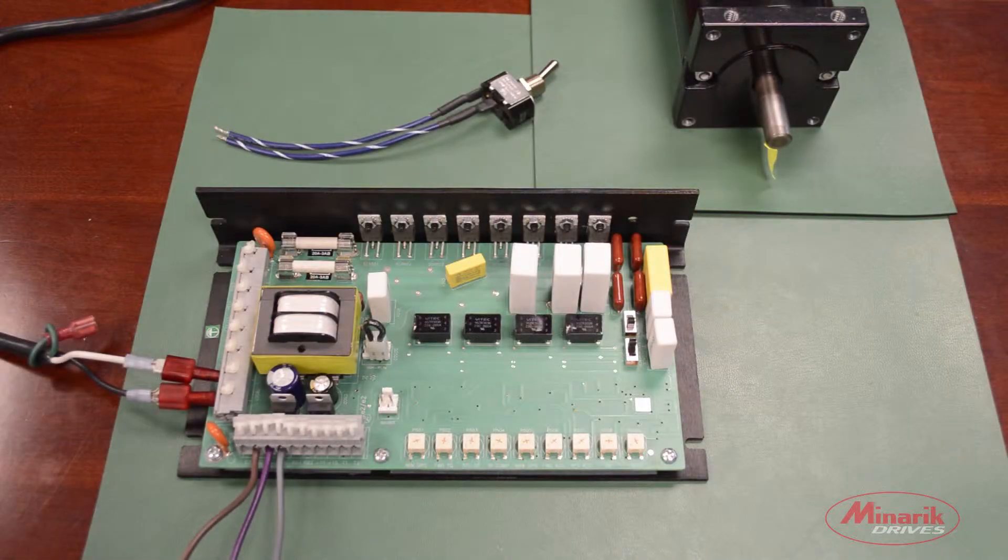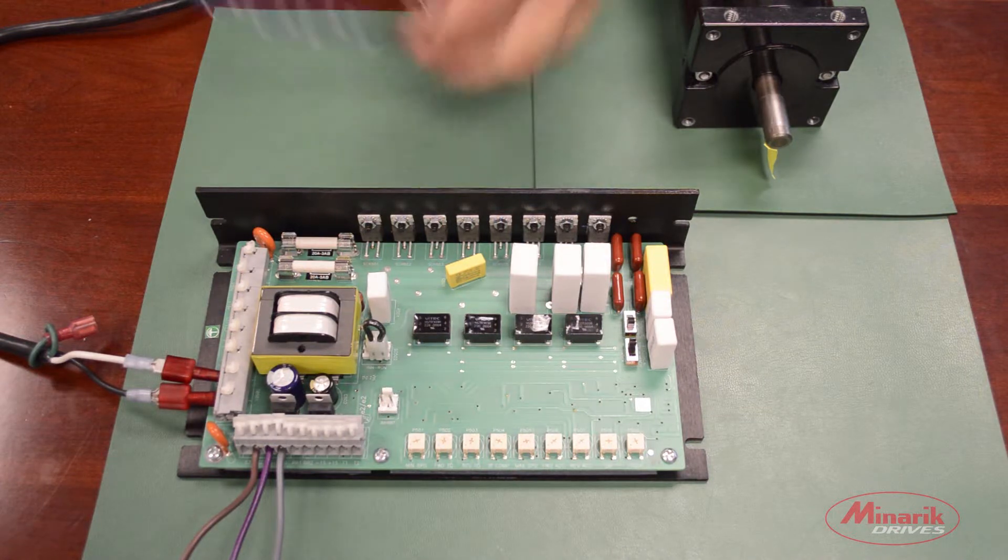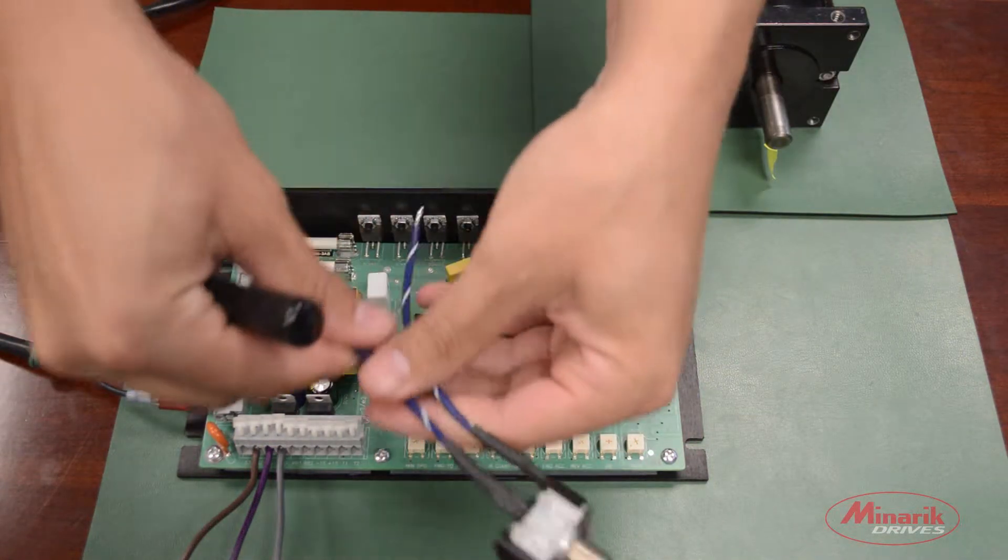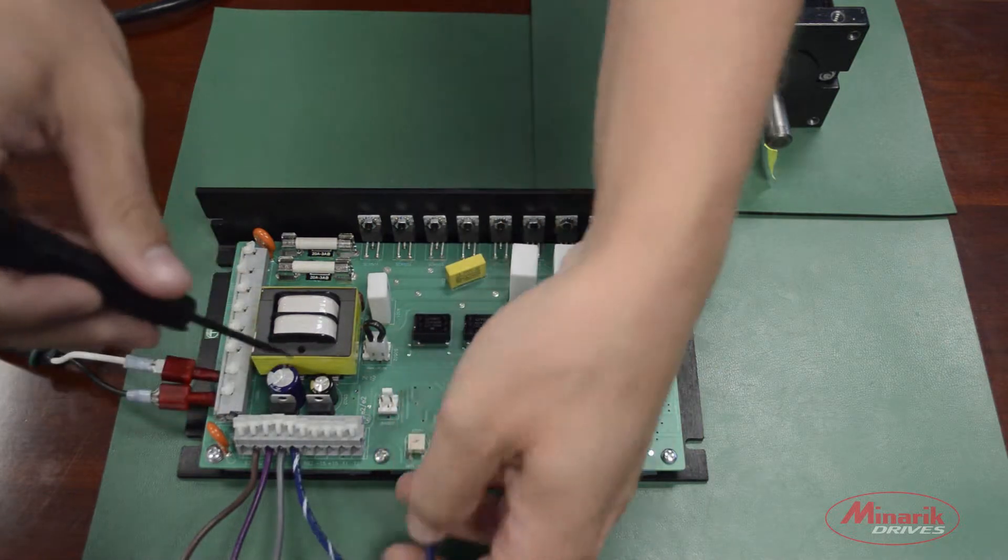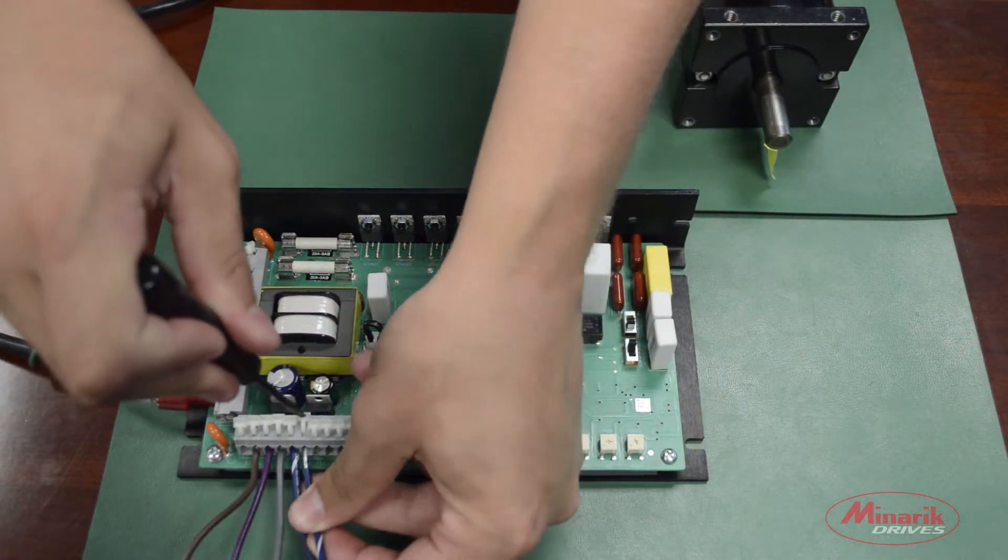Next we're going to wire up a run brake switch. To wire this up we'll take one of the leads to the switch to RB1 and the second lead to RB2.